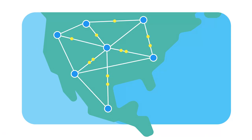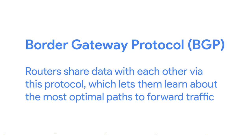A core router usually has many different connections to many other routers. Routers share data with each other via a protocol known as BGP, or Border Gateway Protocol, that lets them learn about the most optimal paths to forward traffic. When you open a web browser and load a web page, the traffic between computers and the web servers could have traveled over dozens of different routers. The Internet is incredibly large and complicated, and routers are global guides for getting traffic to the right places.